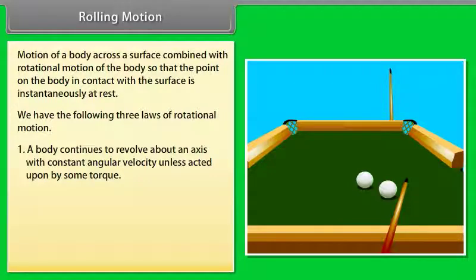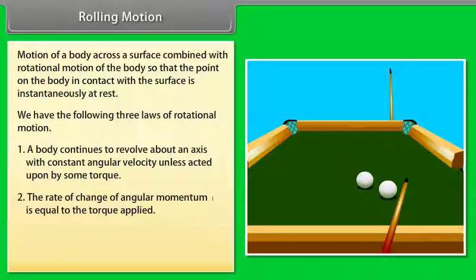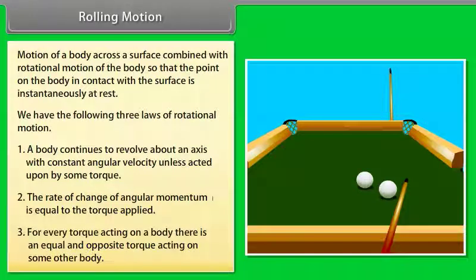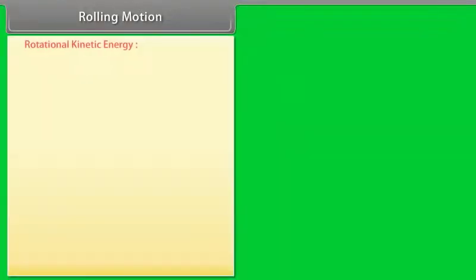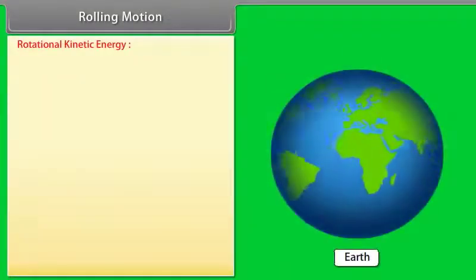Rolling motion is the motion of a body across a surface combined with rotational motion, such that the point on the body in contact with the surface is instantaneously at rest. There are three laws of rotational motion.